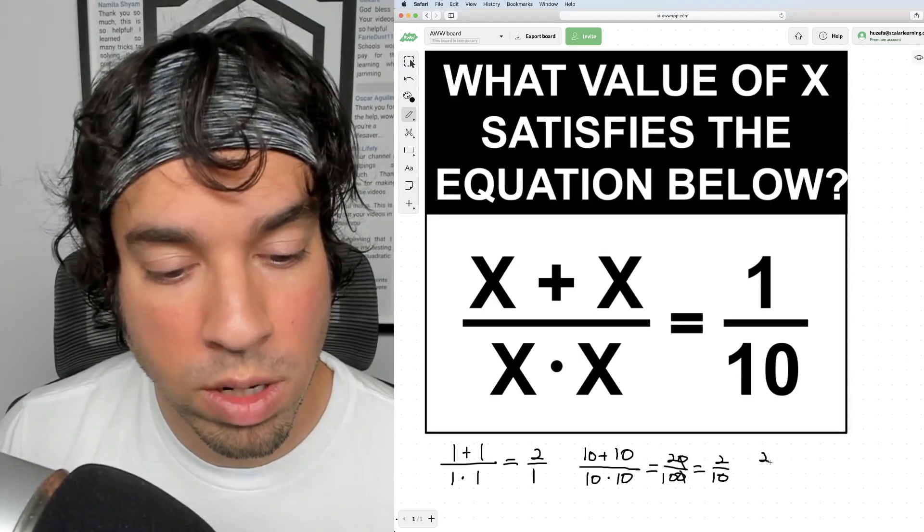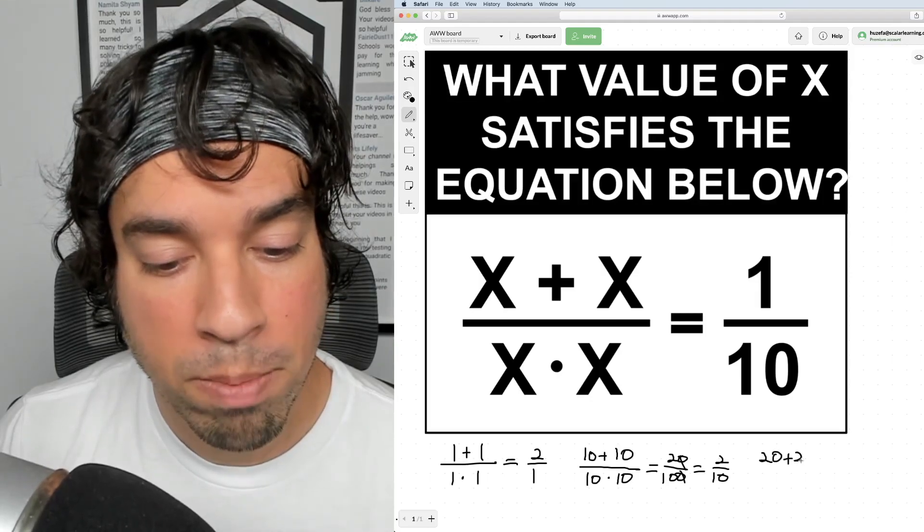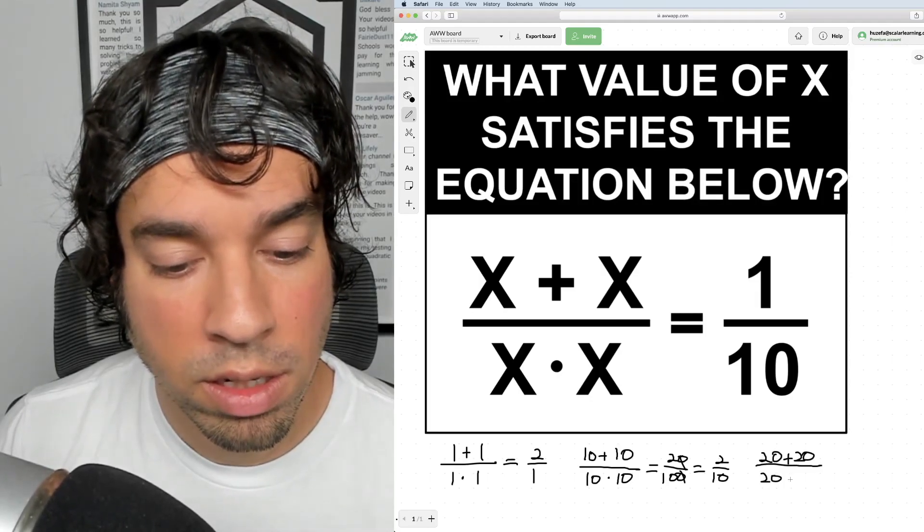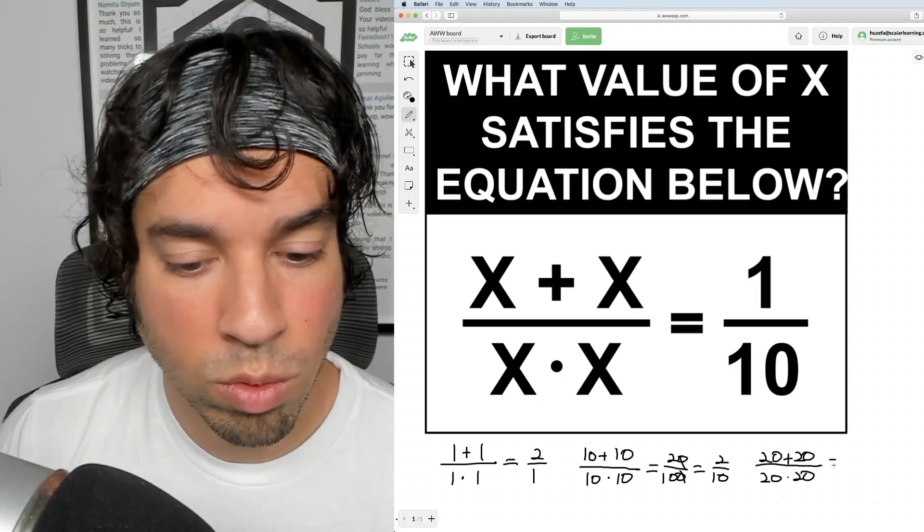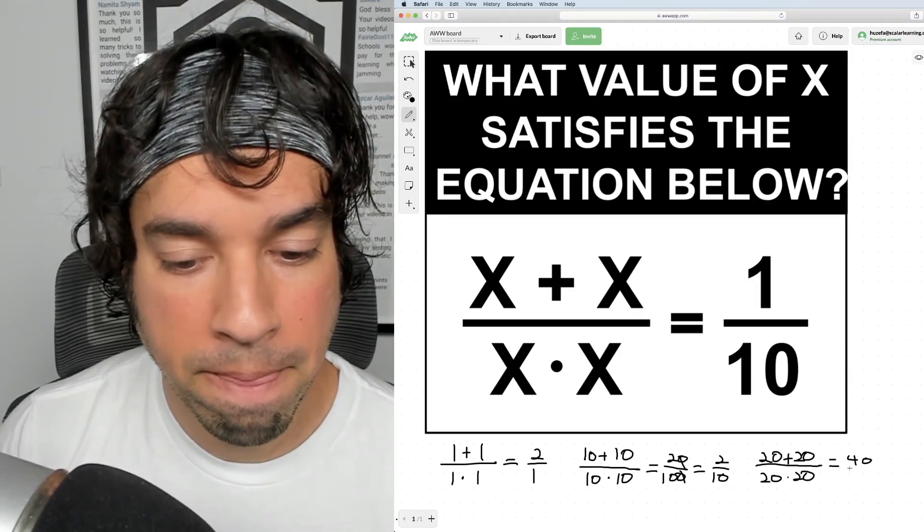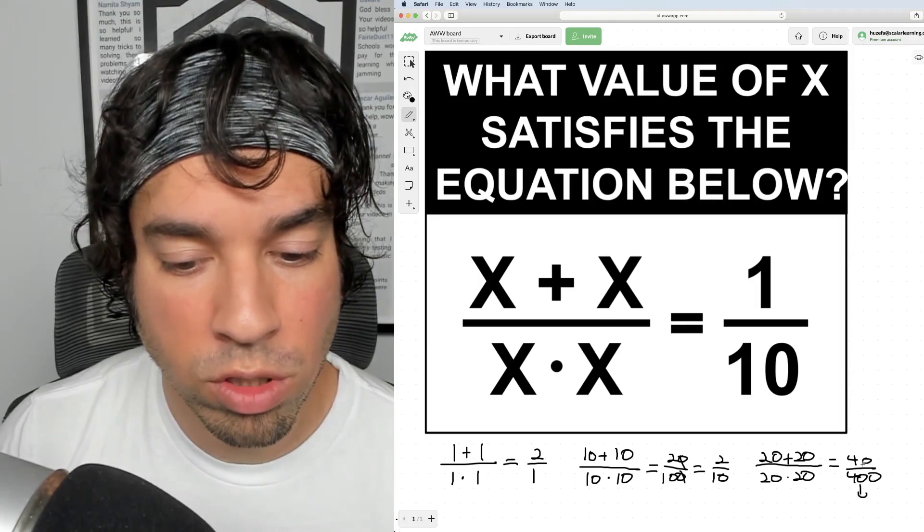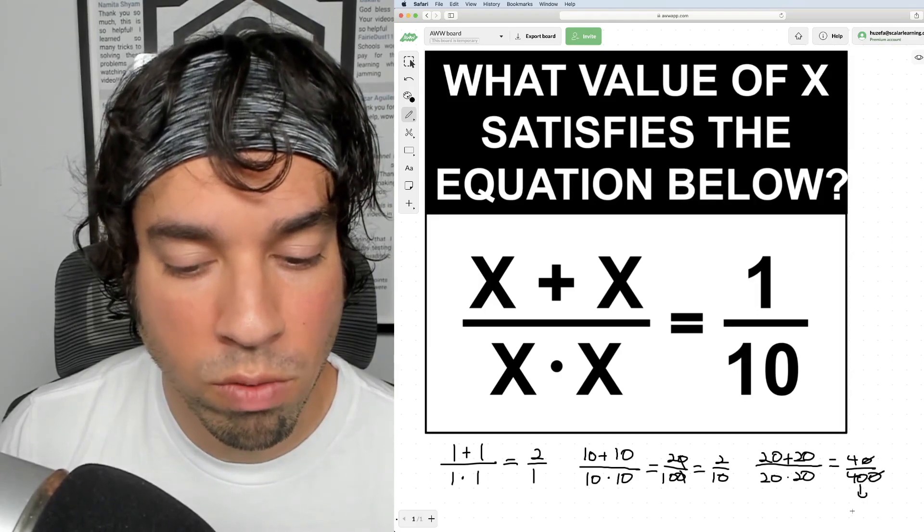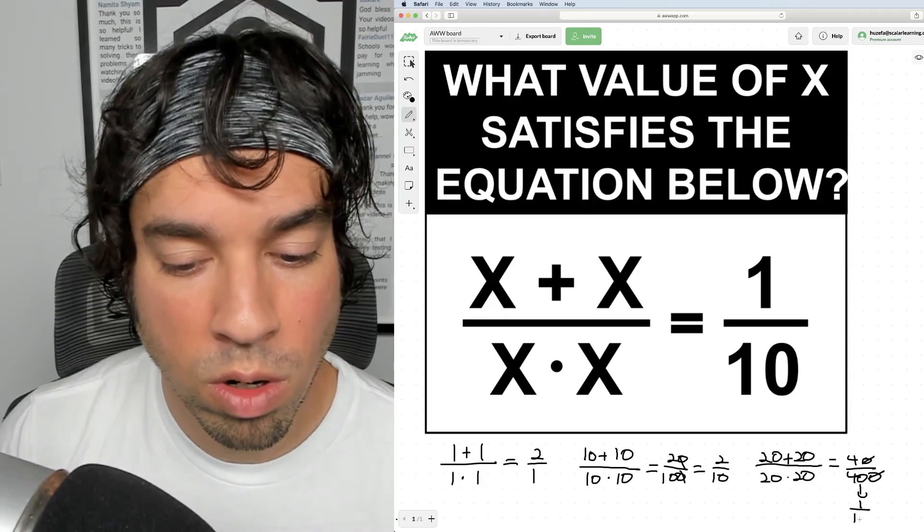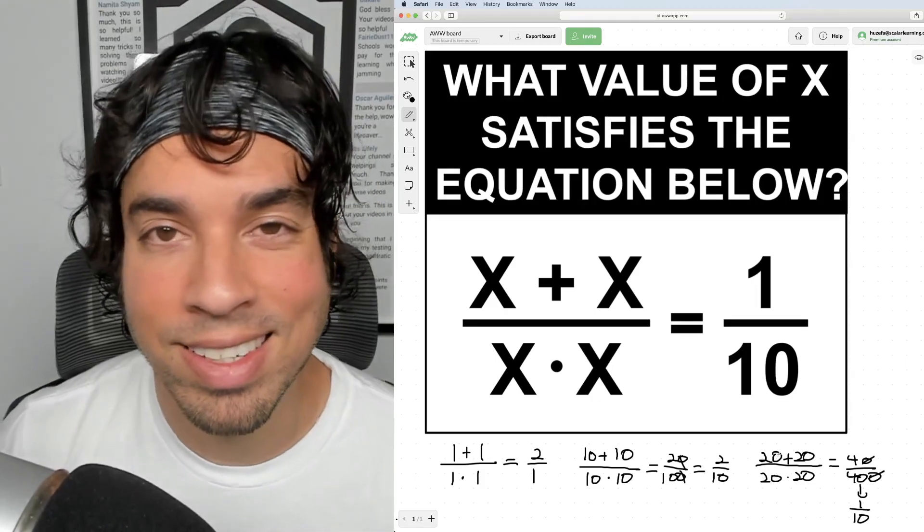And you'll see (20 + 20) / (20 · 20), which equals 40/400. Which of course reduces—cross off those zeros—and then 4/40 reduces to 1/10. So you can see your value of x is 20.